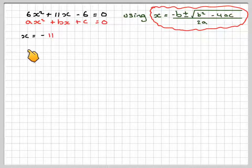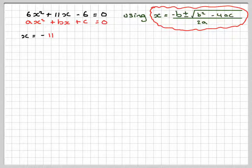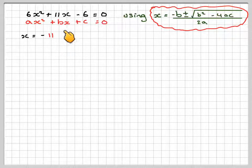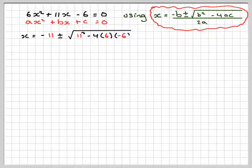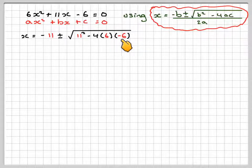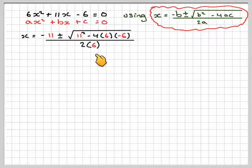That means x will be equal to minus 11 because b is 11. So minus 11 plus or minus 11 squared, b squared, minus 4 times 6 times c. But notice anything negative, you should put it into brackets. All over 2 times a, which is 2 times 6.